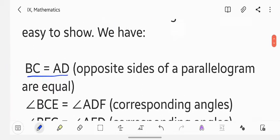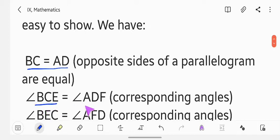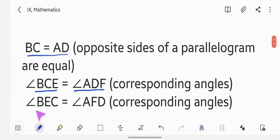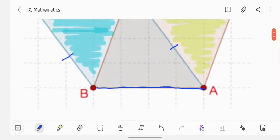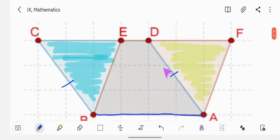The second is angle BCE equals angle ADF which is a corresponding angle, and that is the property of parallel lines. And angle BEC equals angle AFD. You can take the screenshot of this particular diagram and then refer to the criterions or parameters which we are taking for the proofs.